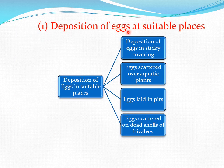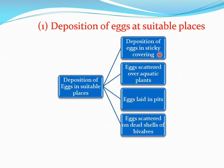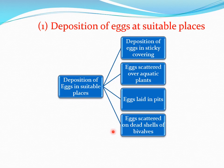First is deposition of eggs at suitable places. Fishes choose different suitable places for deposition of their eggs. First, deposition of eggs in a sticky covering. Second, eggs scattered over aquatic plants. Third, eggs laid in pits. And fourth, some species deposit their eggs in the dead shells of bivalves.